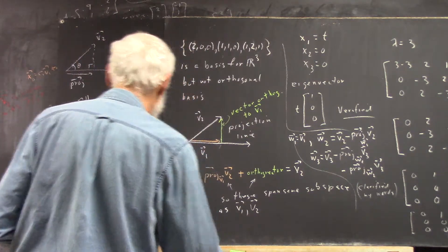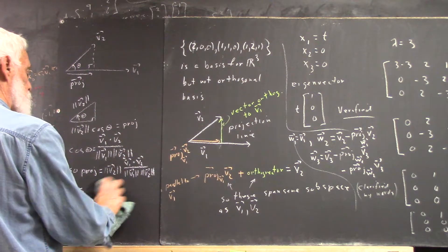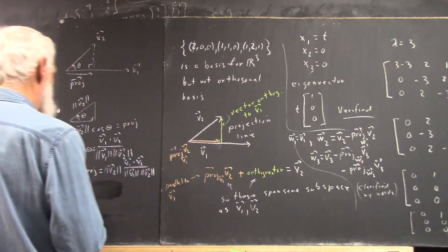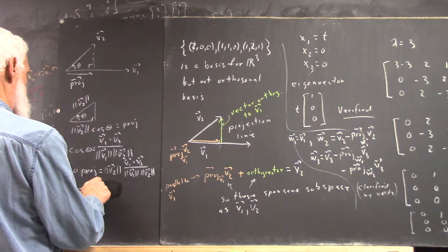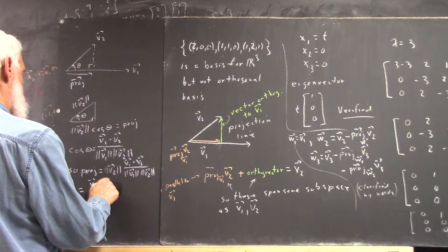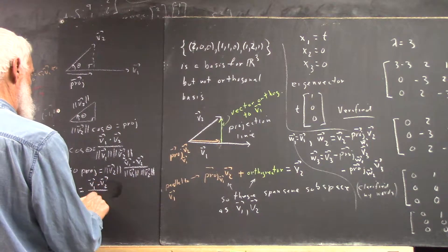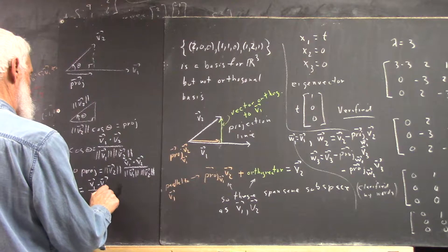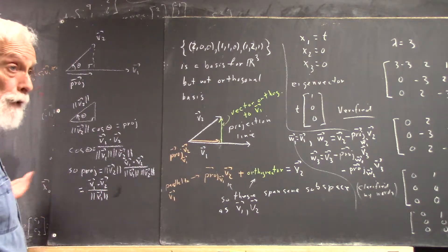Which is just, you know, magnitude of V2 divides out. Okay. And we have this. All very easy to calculate.